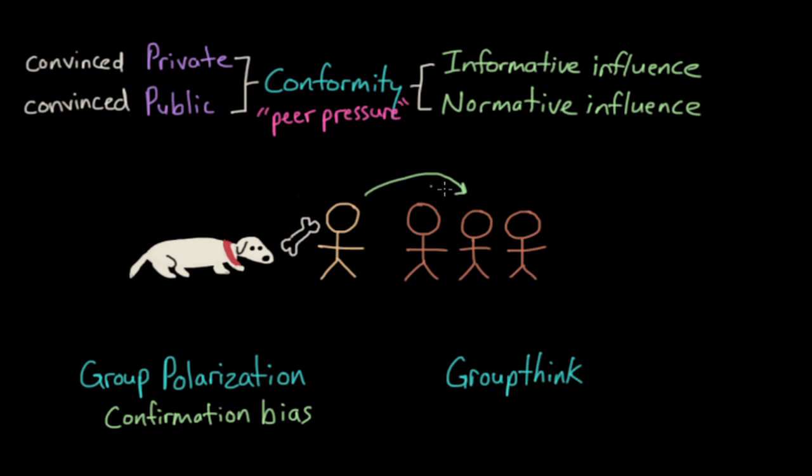In addition, there are two different ways in which a person can conform, publicly or privately. If you privately conform to a group's belief, you change your behaviors and opinions to align with the group. If you publicly conform, you're temporarily or superficially changing. So outwardly, you agree with the group, but on the inside, you actually maintain your own core beliefs.